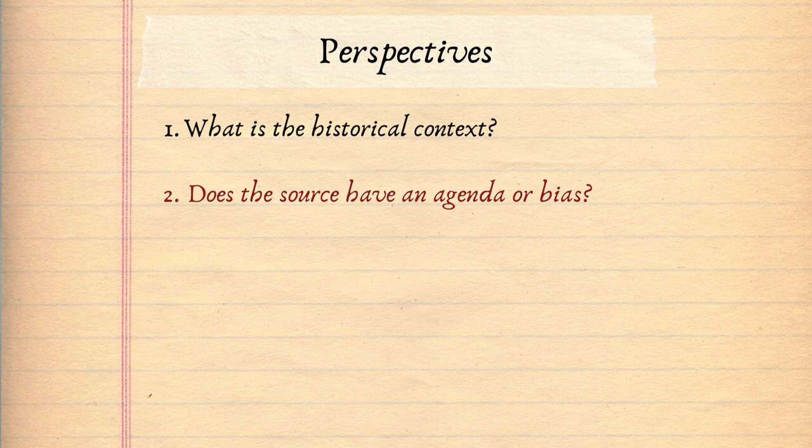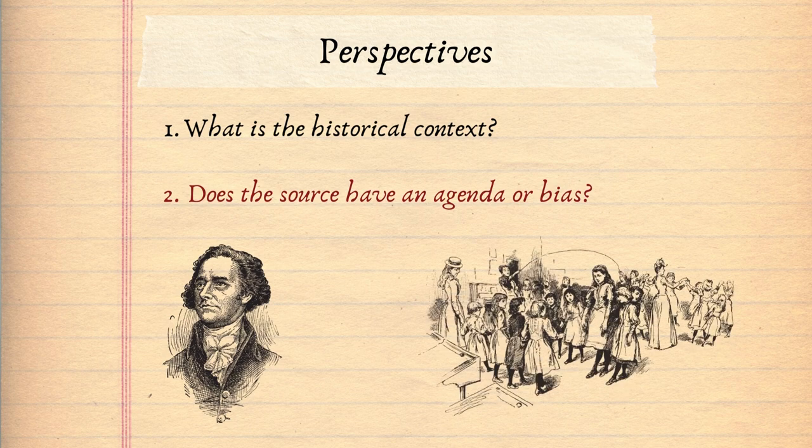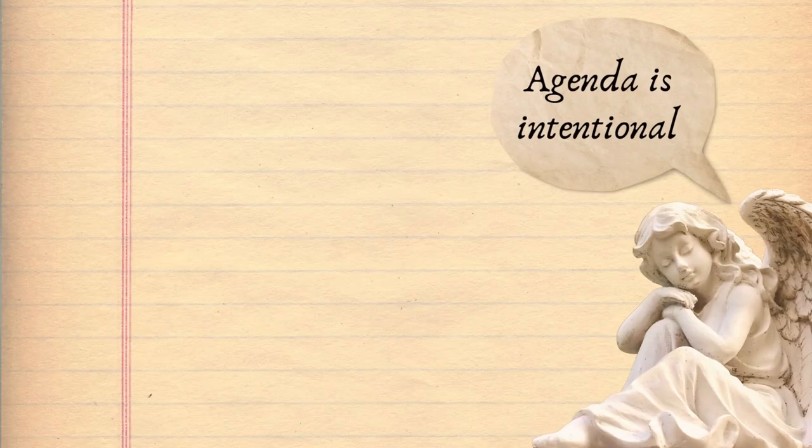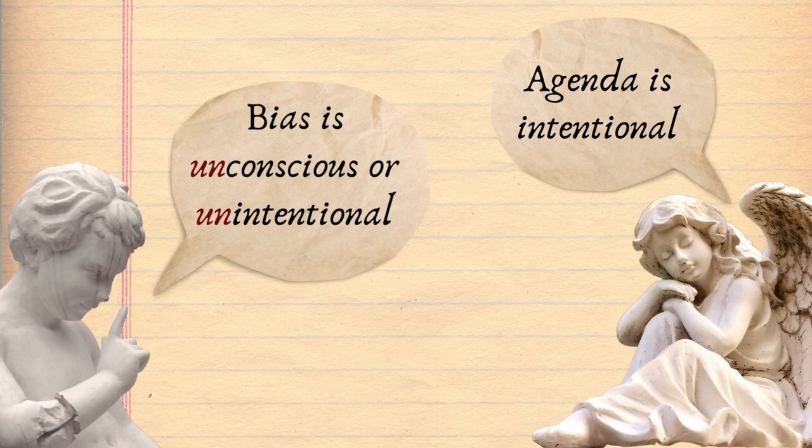Agenda and bias can affect a source in similar ways. They both relate to the creator of the source, be that an individual, a company, or a group of people. Agenda and bias are both related to beliefs or worldviews, and these beliefs and worldviews shape the actions, creations, and words of the creator, and hence they shape the historical source. The key difference between the two is that agenda is intentional and bias is often unintentional or unconscious. You'll probably need to understand the creator's historical context as well as their social standing in that context to analyse their potential agendas and biases.